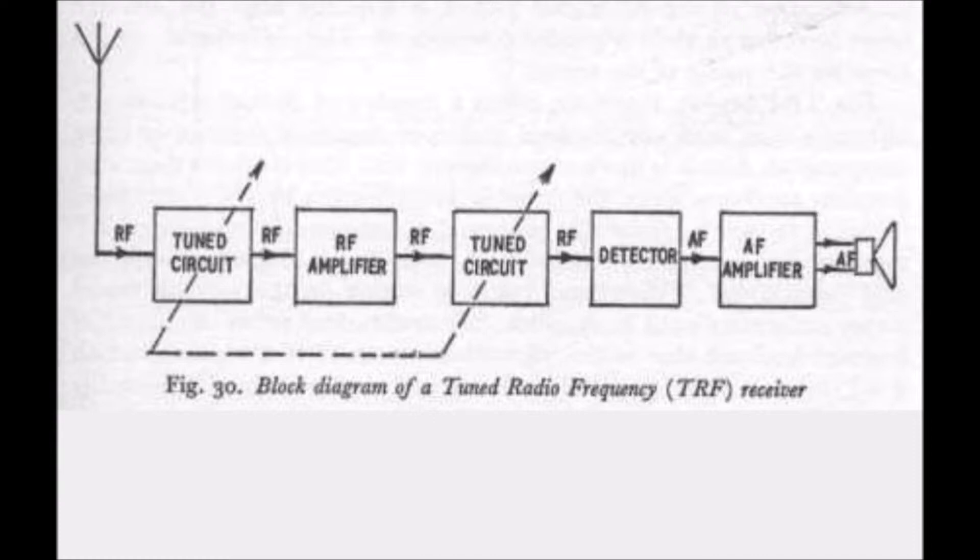Where it will be noticed two tuned circuits are involved, usually mechanically coupled or ganged together. The first of these accepts the required signal, i.e., tunes to the required frequency, which is then boosted by the RF amplifier and passed through the second tuned circuit on the detector. This is then followed by one or more stages of AF amplification as required.